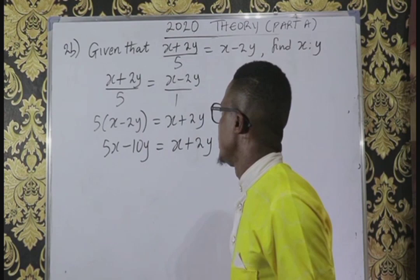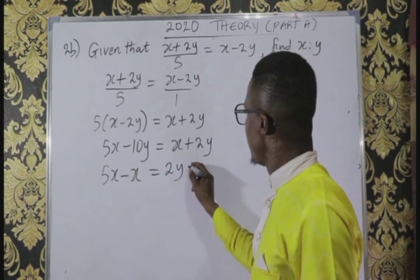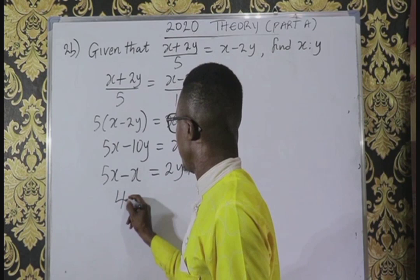Now collecting like terms: we have 5x, x crossing over becomes minus x, equals 2y, and minus 10y comes over to become plus 10y. So 5x minus x is 4x, and 2y plus 10y is 12y.